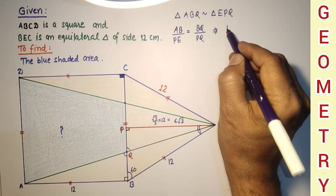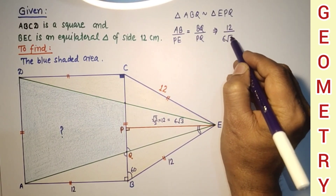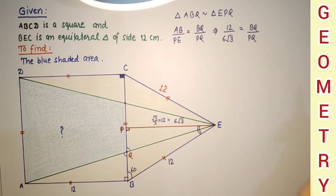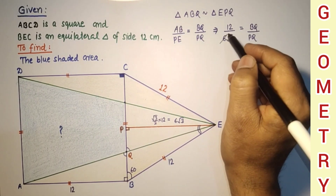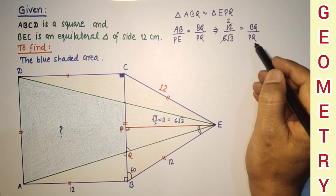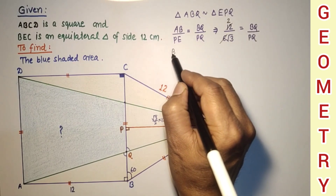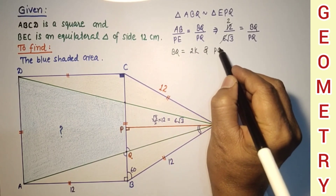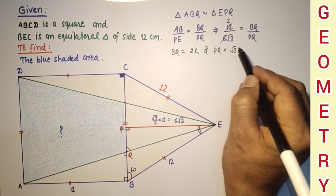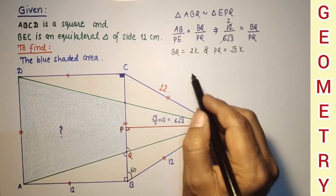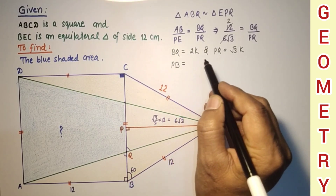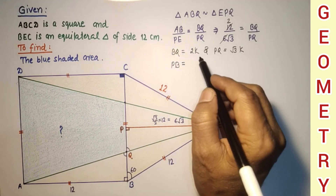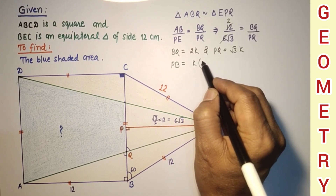So 12 over 6 root 3 equals BQ over QP. Canceling the 6, BQ to QP is 2 to root 3. So we can say BQ equals 2K and PQ equals root 3 K, where K is any ratio constant. Therefore PB equals BQ plus QP, which equals K times (2 plus root 3).